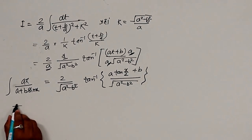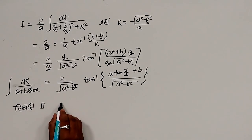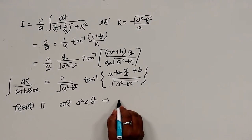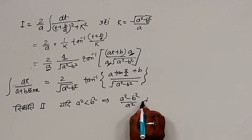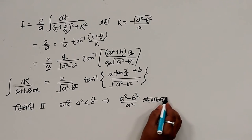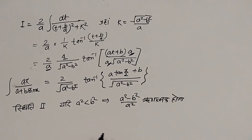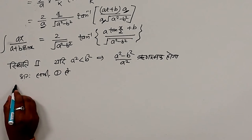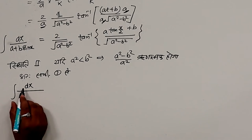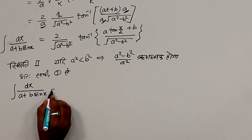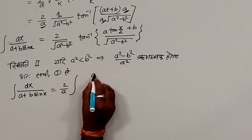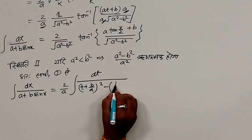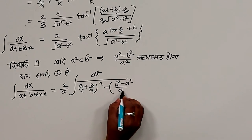अब दूसरी स्थिति पर चलते हैं। यदि a² < b² हो तो (a²−b²)/a² ऋणात्मक मान देगा। समीकरण 1 से ∫ dx/(a + b·sin x) = (2/a) ∫ dt / [(t + b/a)² − (b²−a²)/a²]।